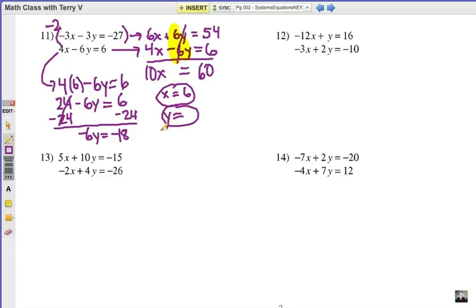Now the ordered pair answer is x value is 6, y value is 3. Those linear equation lines would cross at positive 6, positive 3. Now you look at 12, 13, and 14. Figure out which equation or equations you'll have to multiply to eliminate one of the terms. Go ahead.